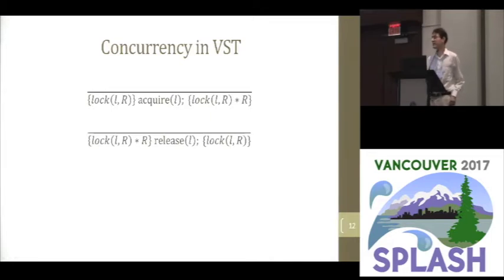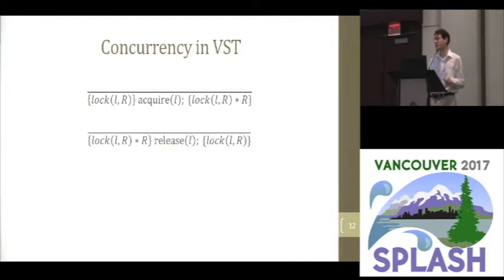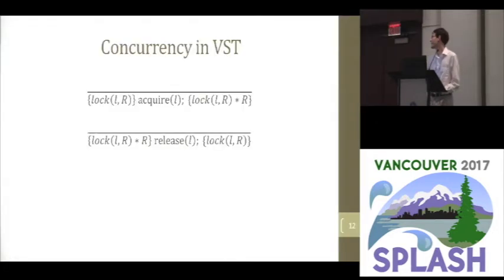An atomic exchange operation is pretty similar to this, but it has a couple of significant differences. First, a lock, when we hold it, can only be in states locked or unlocked. The location that we're doing atomic exchange on, on the other hand, holds a value, and the resources it holds can depend on that value. The second wrinkle, and the one that makes this a bit more complicated, is that atomic exchange happens instantaneously. There's no intermediate state in which the program has access to the invariant — it gains access to the invariant, makes modifications, and gives it up all in a single step.